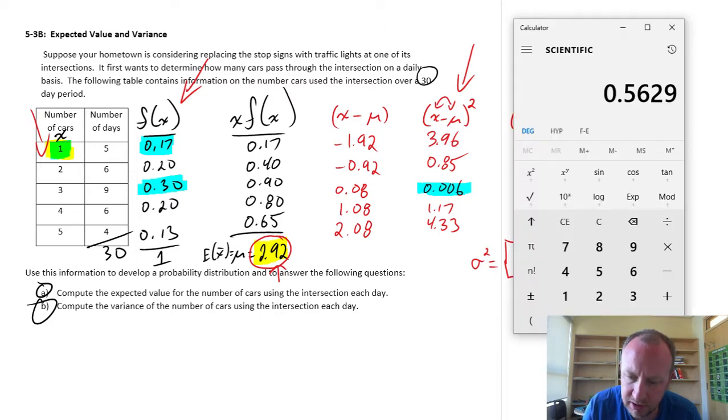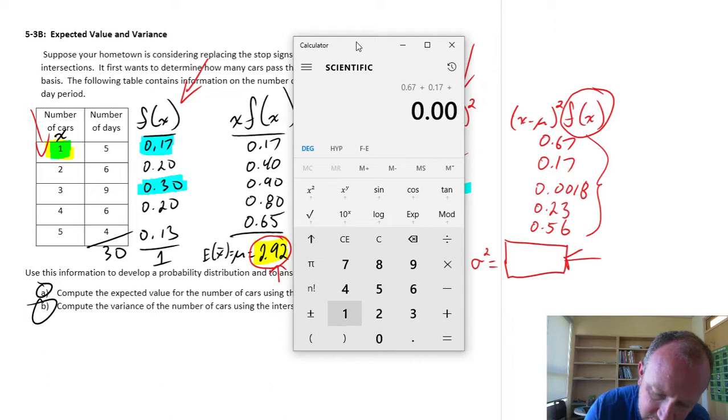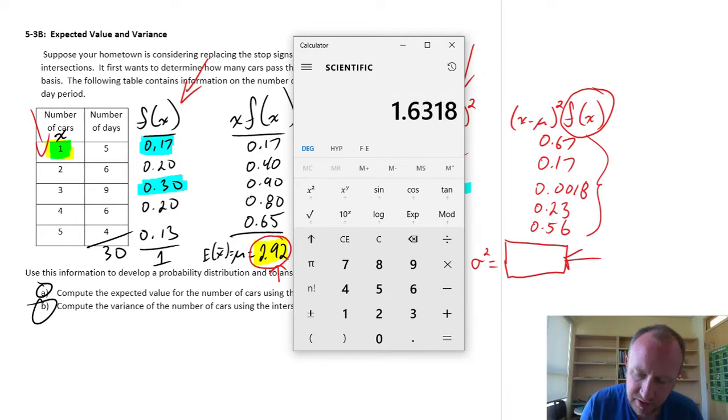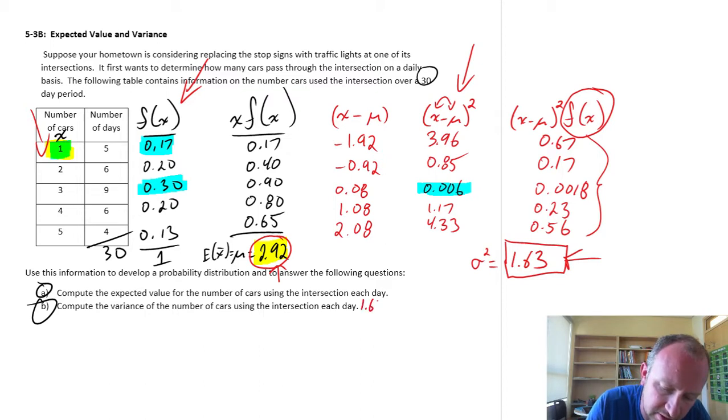So 0.67 plus 0.17 plus 0.0018 plus 0.23 plus 0.56 equals 1.63, our final answer for this part.